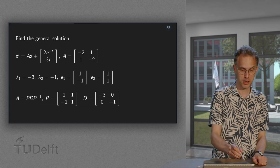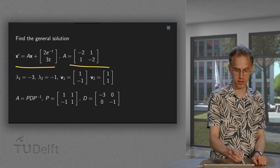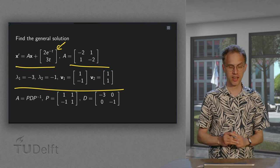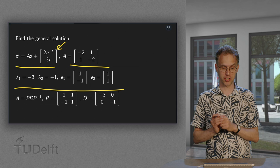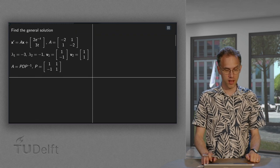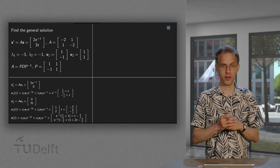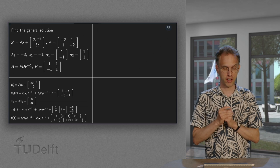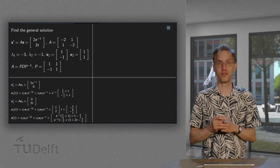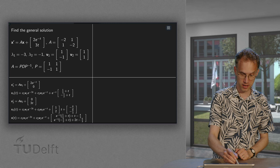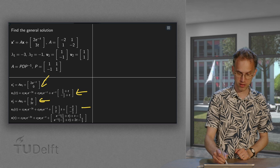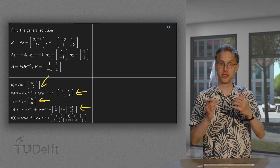So now we do the following one. x prime equals ax, a same as before with the same lambdas and eigenvectors and so on, but with a slightly more complicated non-homogeneous part 2e to the power of minus 3t. Slightly more complicated, still looks very easy. So what happens if we try to find a solution? First of all, we can construct the solution using the information from the previous two videos where we solved this problem over here. We found this solution. And we solved this problem over here. We found that solution. And now we can just split it up.